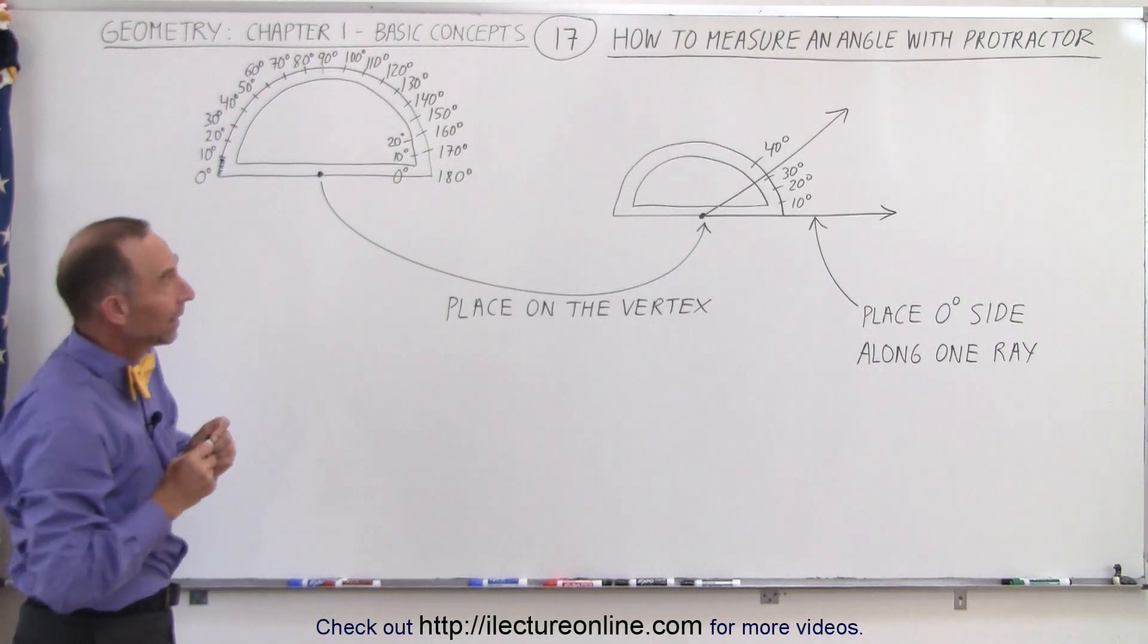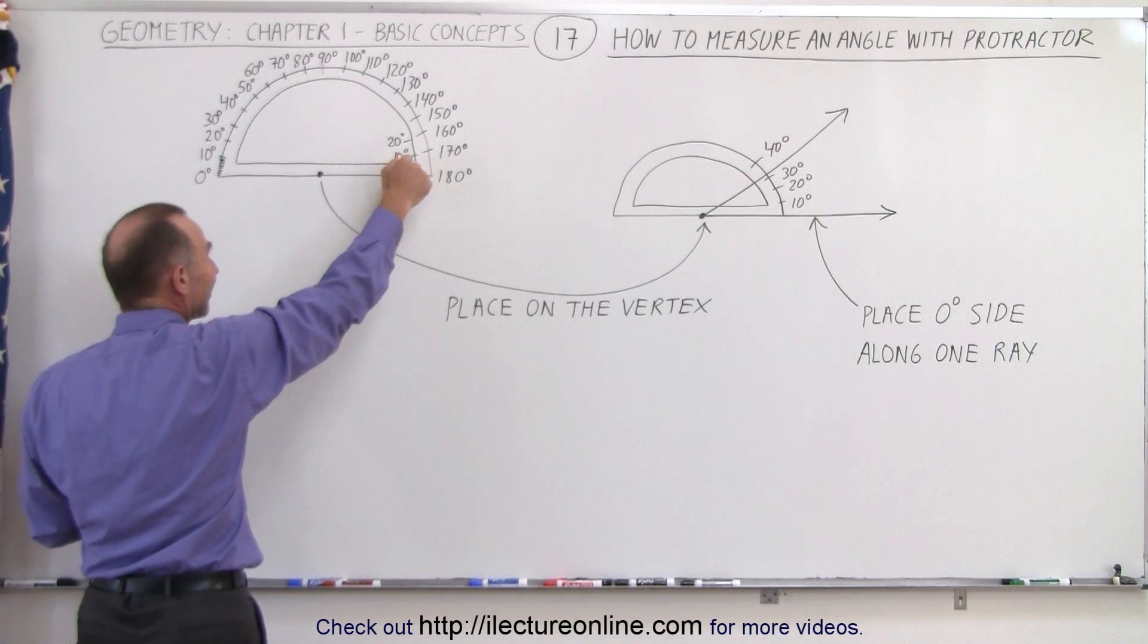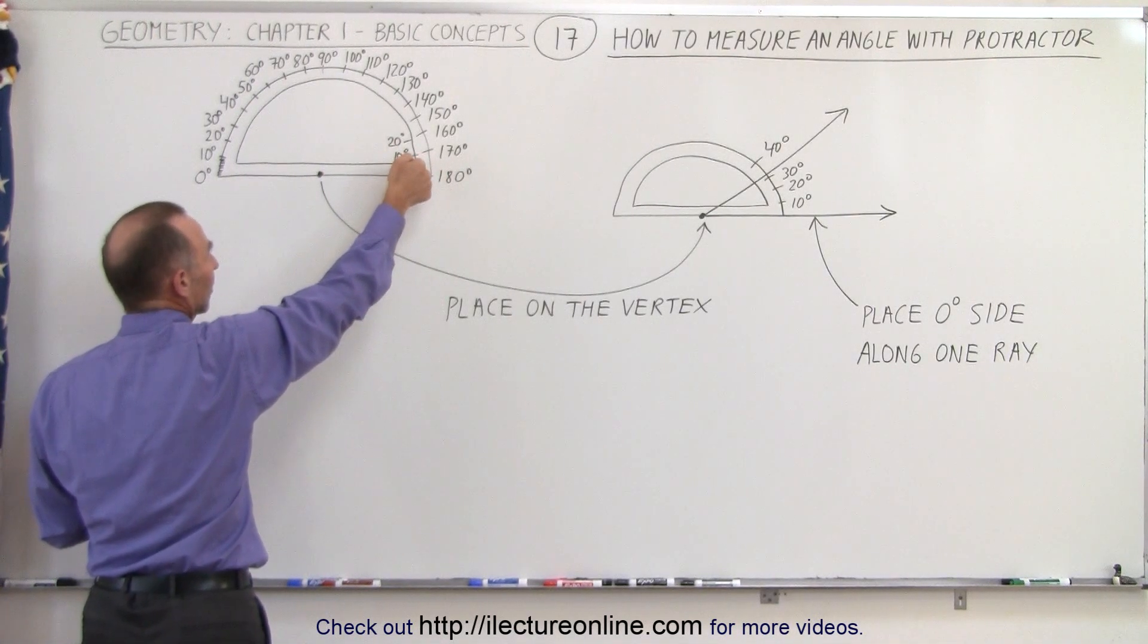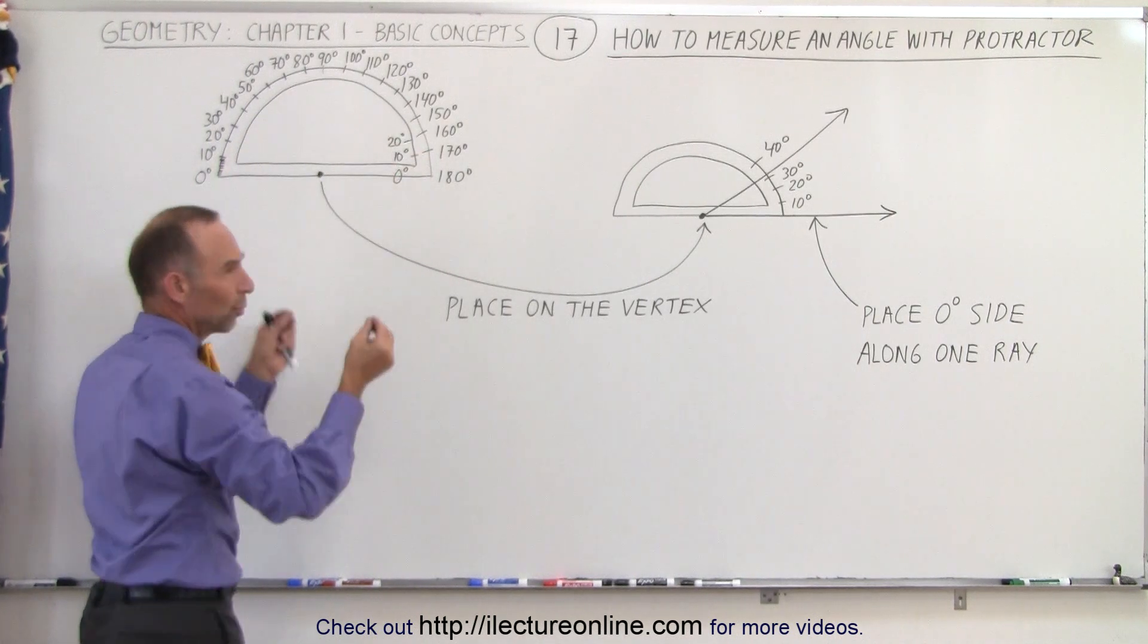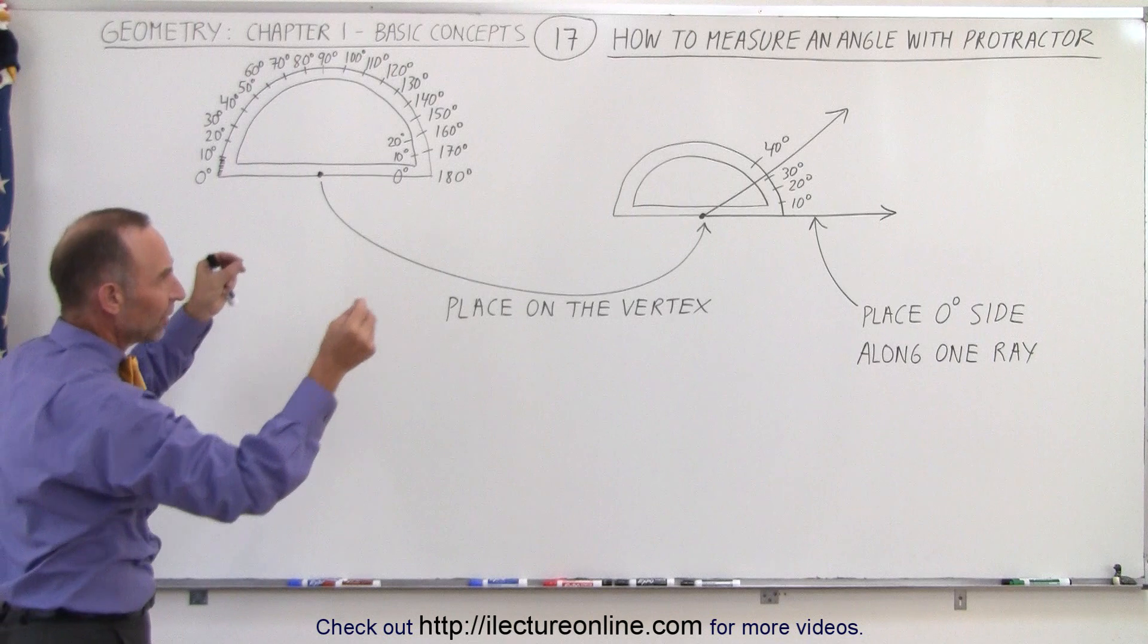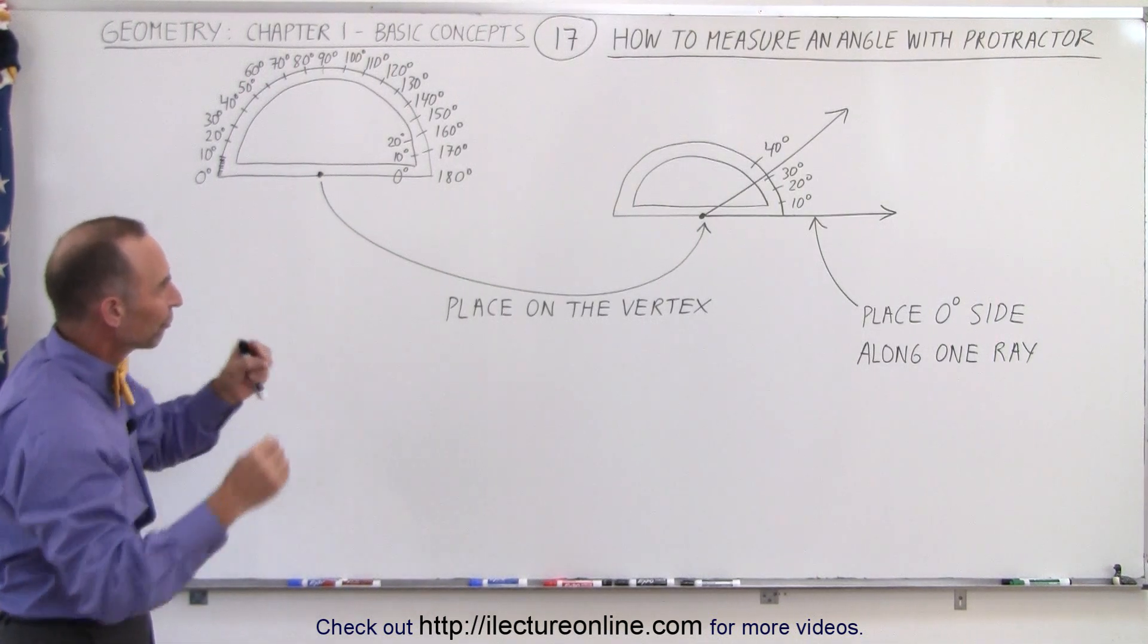And notice that typically a protractor also starts from zero on the other side, and typically on the inside of the protractor here, and marks it all the way from zero to 180 degrees in the other direction, which makes it easier to place it onto your angle, so that you can read it from one direction or from the other direction.